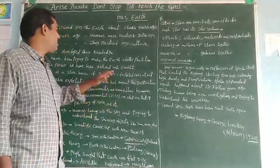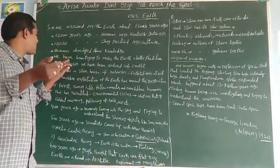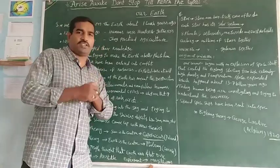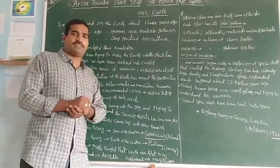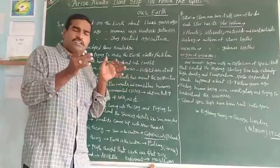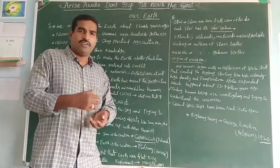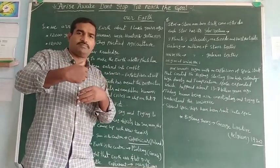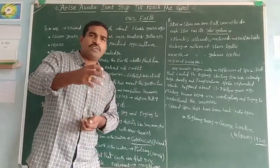Humans practiced agriculture and in this way, humans developed with their knowledge. We have been trying to make the Earth a better place to live. In this process, we are having 12 kinds of conflicts. Initially, all humans thought that Earth is a storehouse of all resources. We exploited more and more from the Earth, collecting more than enough, and that's why we are facing some environmental problems.